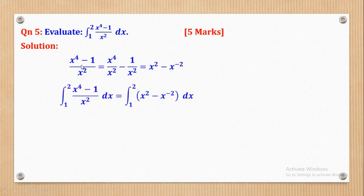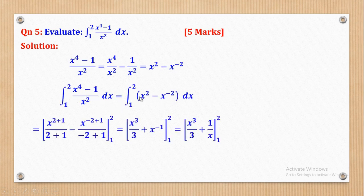That means the integral is now the integral of x² minus x⁻². We apply the integration rule: increase the power by 1 and divide by the new power. So for x²: power becomes 2+1=3, divided by 3. For x⁻²: power becomes −2+1=−1, divided by −1. Simplifying, x⁻¹ is equal to 1/x, so we get the integrated expression.